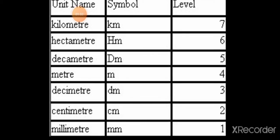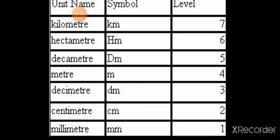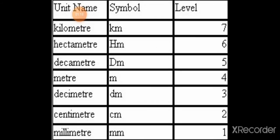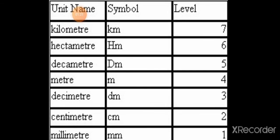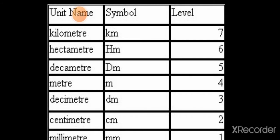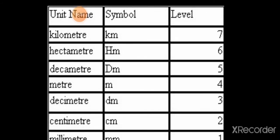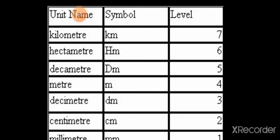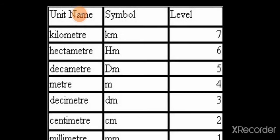Level Four: symbol m, unit name meter. Level Five: symbol dam, unit name decameter. Level Six: symbol hm, unit name hectometer. Last one, Level Seven: symbol km, unit name kilometer.